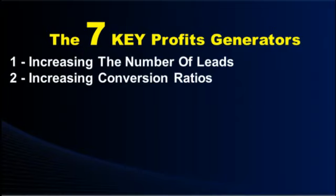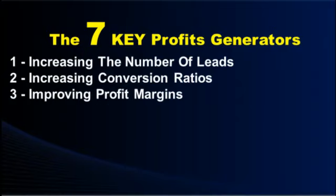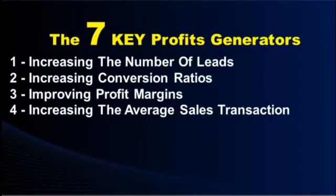The third way is improving your profit margins — you actually get to keep more of the money from each client. In your homework I give you seven ways to increase each one of these categories, so this is the overview. There are 49 different suggestions in total.